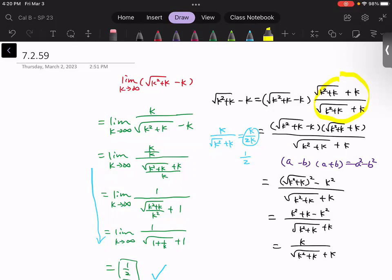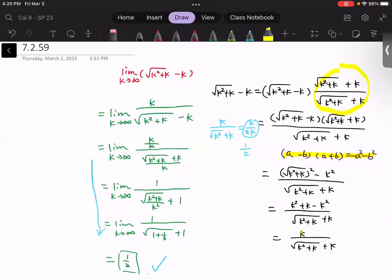By doing so, on top we have an opportunity to apply the formula a minus b times a plus b. This is a squared minus b squared. Then the numerator will become k.